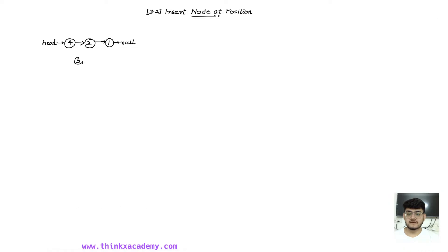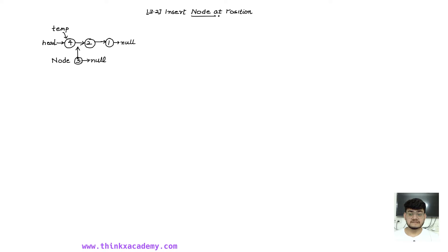The first step involves allocating this node using the node class. We will create an object by passing the data three. Now, whenever you want to insert a node at any particular position or according to the value of a node, we need to remember one important thing: we will start the traversal from the first node. We will create a temporary pointer, which will be an iterator moving from one node to another, checking whether we are at the position where we wish to insert. This temporary pointer should point to one position before wherever we want to insert node three.